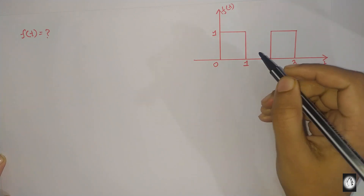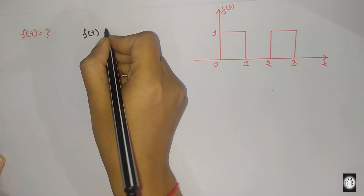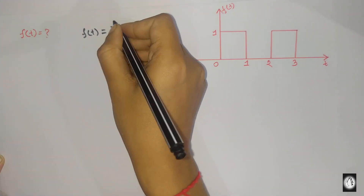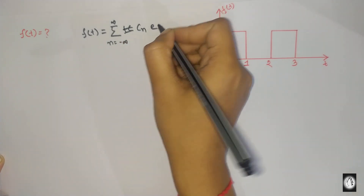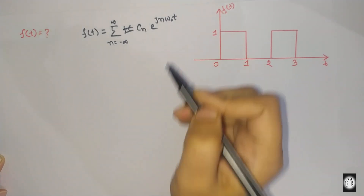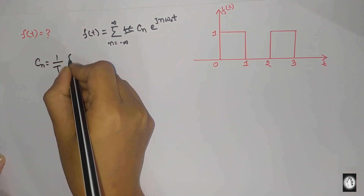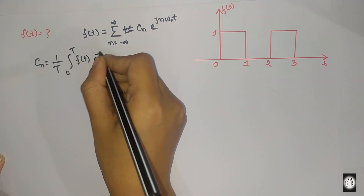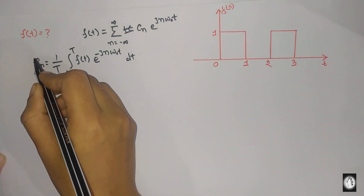I will show you the generalization: f(t) is equal to the summation from n equal to minus infinity to plus infinity of cn times e to the power jn·ω₀t. The constant cn is equal to 1 over T, times the integration from 0 to T of f(t) times e to the power minus jn·ω₀t dt.